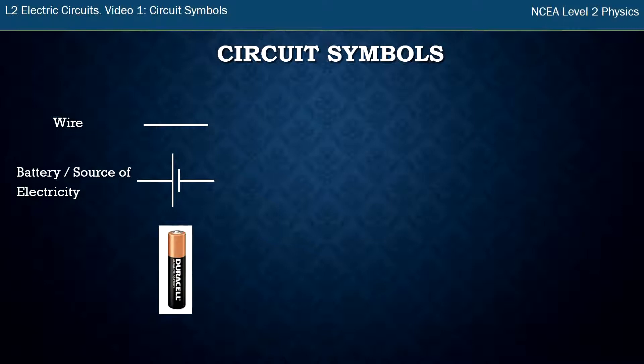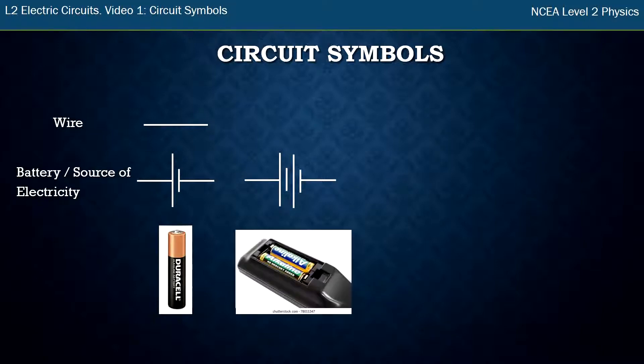So that could be like a little battery like this. You may see the symbol drawn in circuits with a couple of these together, and that just means that you've got a number of batteries together. Or you could see it with a dash with an arrow through it. That means you've got a source of electricity that can change. It's variable.